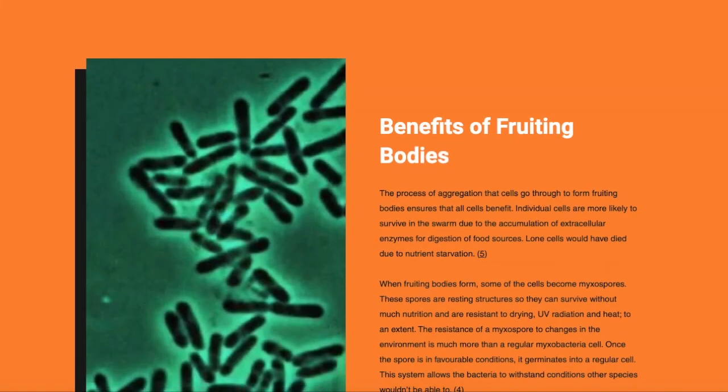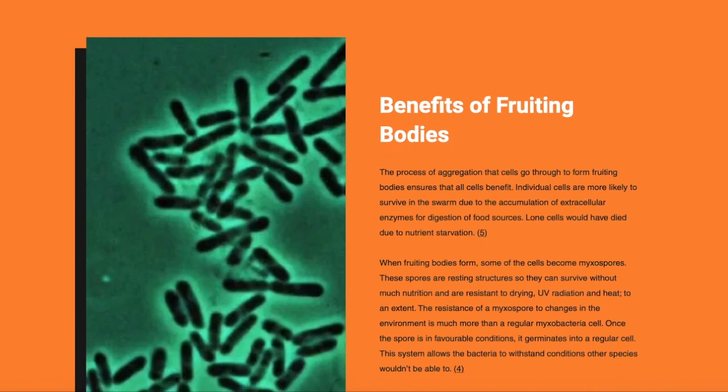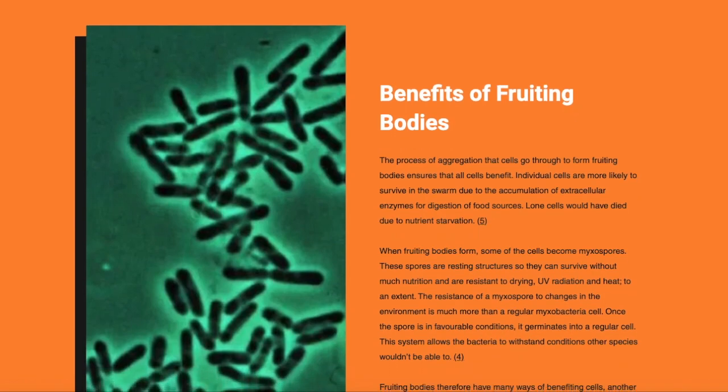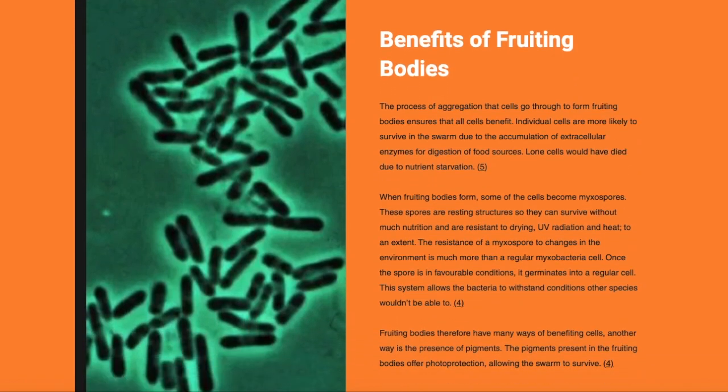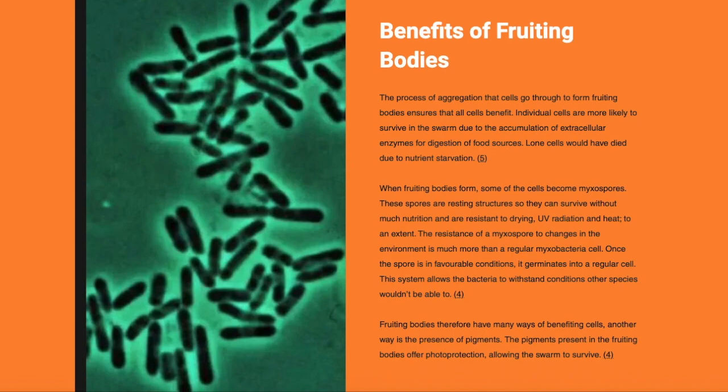The aggregation process when forming the fruiting body allows all cells to survive. Lone cells would die from starvation on their own. Some cells in the body convert to myxospores, which can withstand much harsher conditions, including drying, UV, and high heat.